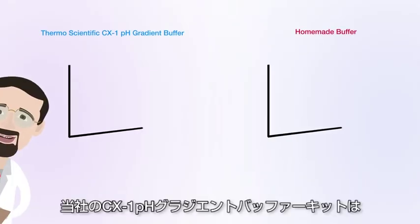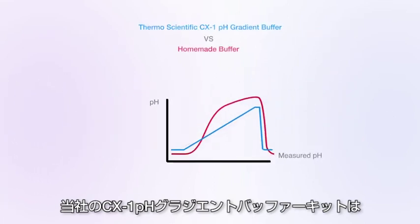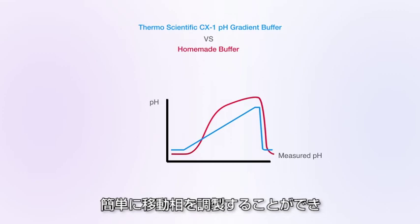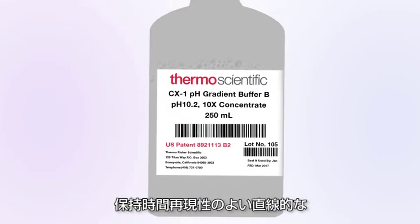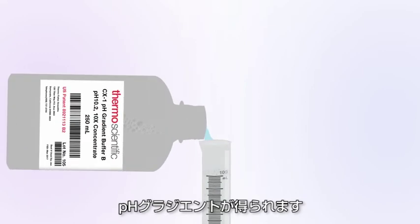The clever scientists at Thermo Fisher Scientific have a solution. Thermo Scientific CX1 pH gradient buffers are easy to make and give linear gradients with reproducible retention times, run after run.